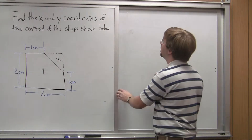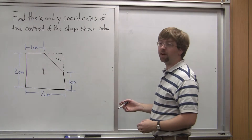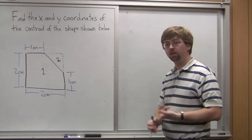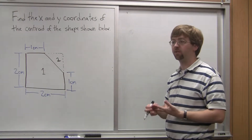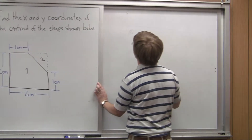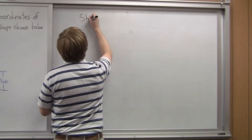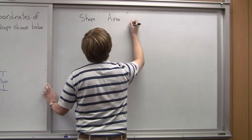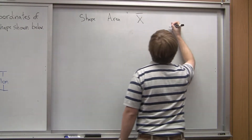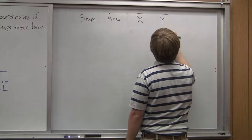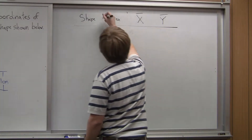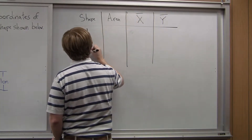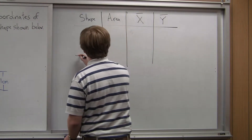The next step is to create a table of values. We need a table that includes, for each of these two shapes, the area, the x-coordinate of the centroid, and the y-coordinate of the centroid. So we've got shape one, which is the square, and shape two, which is the triangular cutout.